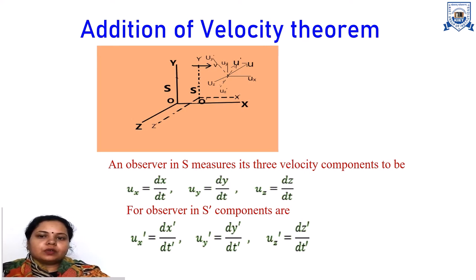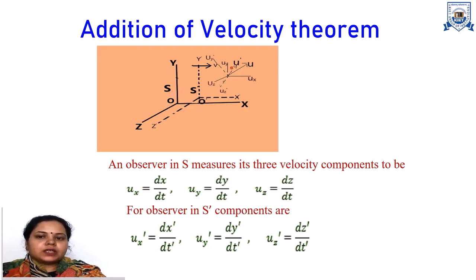We are taking two inertial frames of reference. One inertial frame of reference is S, which is at rest, and the second is S-dash, which is moving with constant velocity V with respect to S — V being a high velocity. We consider a particle moving with velocity U with respect to observer O, and velocity U-dash with respect to observer O-dash.